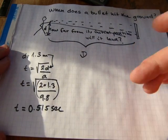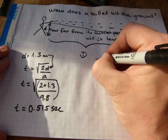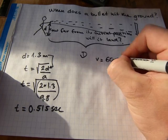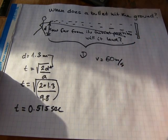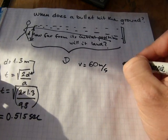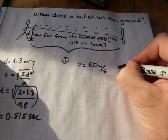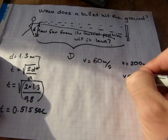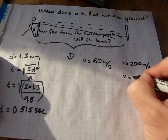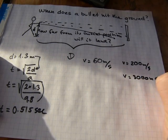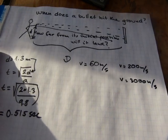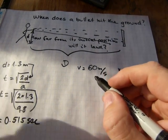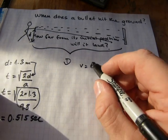If the muzzle velocity is, I don't know, 60 meters per second, we're gonna do one calculation. And we're gonna do this one with 200 meter per second muzzle velocity, as well as, what the heck, 3000 meter per second muzzle velocity as well, and see how far the projectile lands.